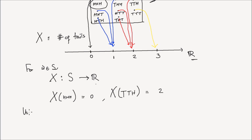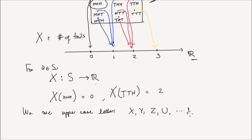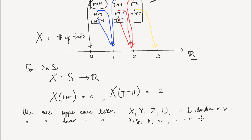Notation-wise, we use uppercase letters — like X, Y, Z, U, M, and so on — to denote random variables. And we also use lowercase letters, like x, y, z, u, to denote realizations of random variables.